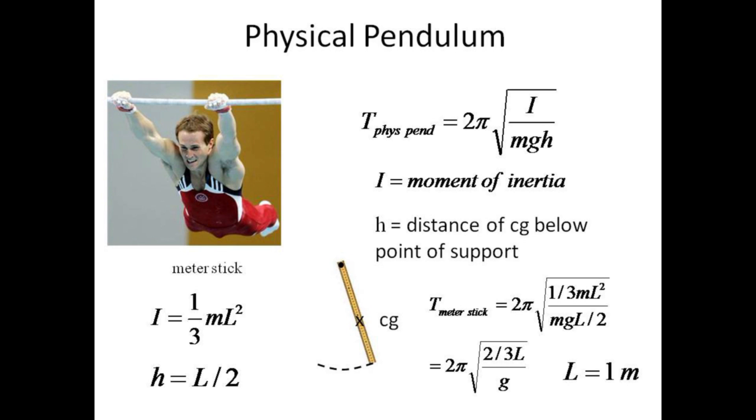A readily available object for the physical pendulum is a meter stick. Then the moment of inertia about one end is one-third ml squared, and the center of gravity hangs a distance l over 2 below the support. Putting these values into the expression for the period gives 2 pi times the square root of 2 thirds over g, since l is just one meter.